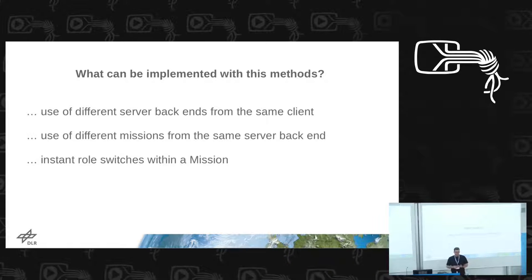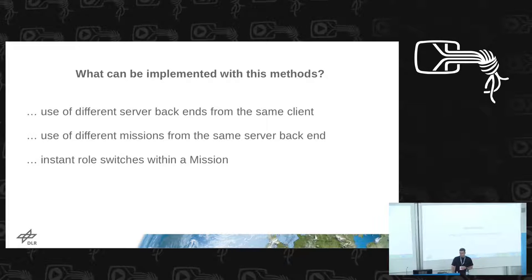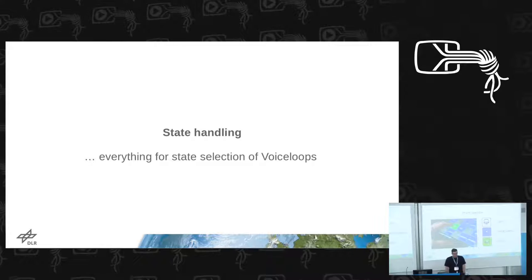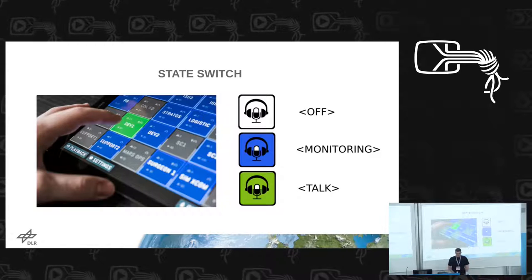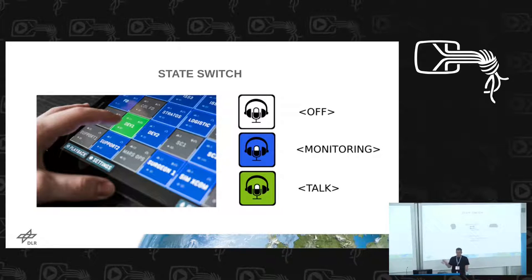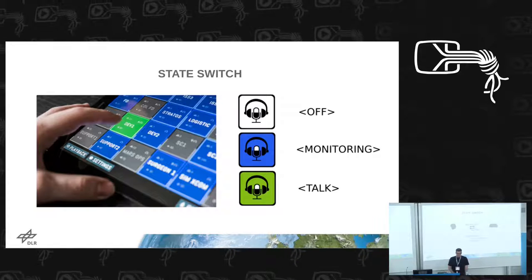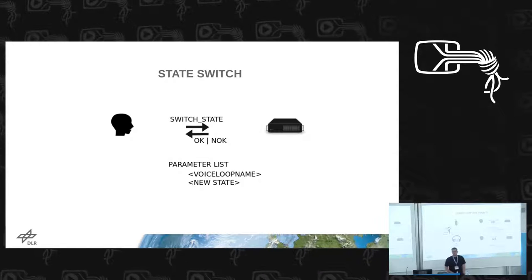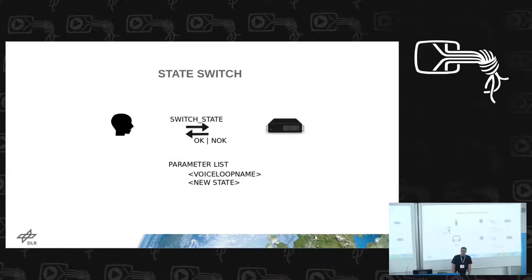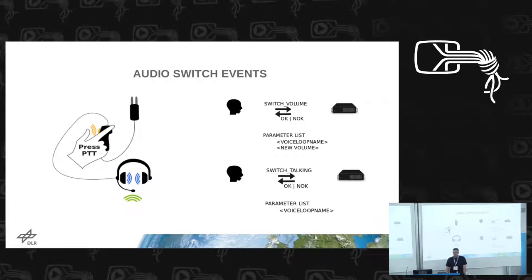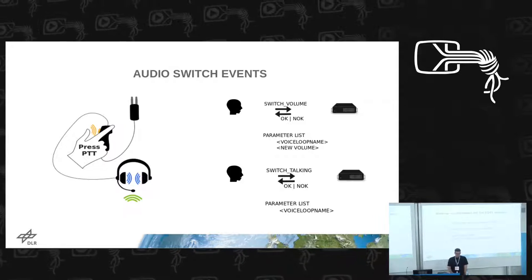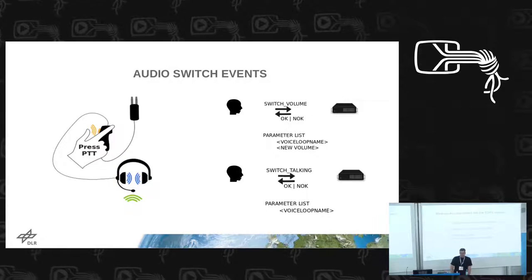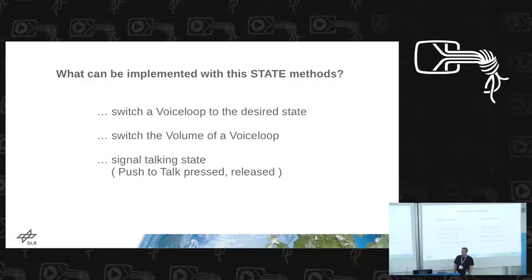In addition to authentication, we need state handling to select voice loops and audio transmission paths. We need to switch a loop off, switch it to monitor, or switch it to talk - these are the three states for a voice loop. A state switch sends the new state and voice loop identifier to the server, which is straightforward. Audio switch events are related to the volume of a voice loop, overall volume, or switching to the talking state. With these state events, we need exactly eight different types of messages in total to build a voice communication system for mission control.